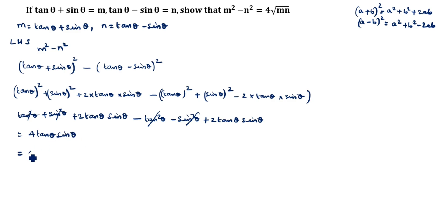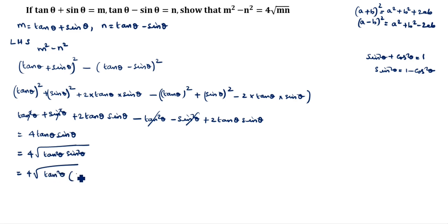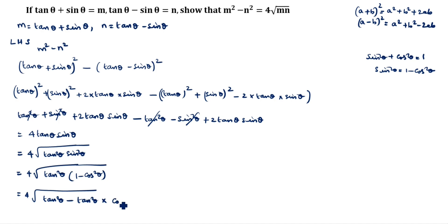Now we write 4 tan θ sin θ as 4√(tan²θ · sin²θ), since the square and root cancel. We write sin²θ = 1 - cos²θ using the identity sin²θ + cos²θ = 1. So this becomes 4√(tan²θ · (1 - cos²θ)) = 4√(tan²θ - tan²θ · cos²θ).